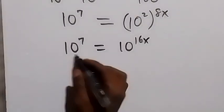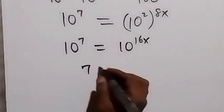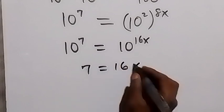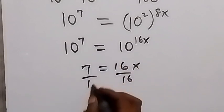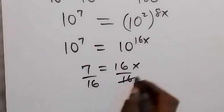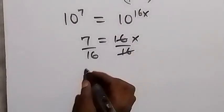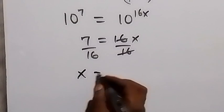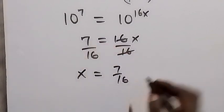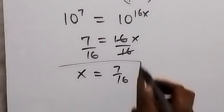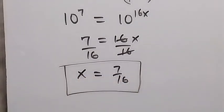We have the same base, so we can equate the powers: 7 equals 16x. Dividing both sides by 16, we have x equals 7 over 16. And this is the value of x in this problem.